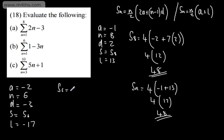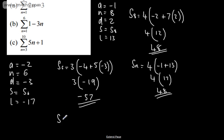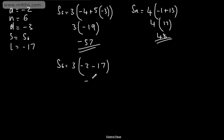The sum of the first 6 terms is 6 over 2, which is 3, times (2 lots of A, which is negative 4, plus n minus 1, which is 5, multiplied by D, which is negative 3). That gives 3 times (negative 4 plus negative 15), which is 3 times negative 19, giving negative 57. Using the a plus l method: 3 times (negative 2 plus negative 17) gives the same result, negative 57.